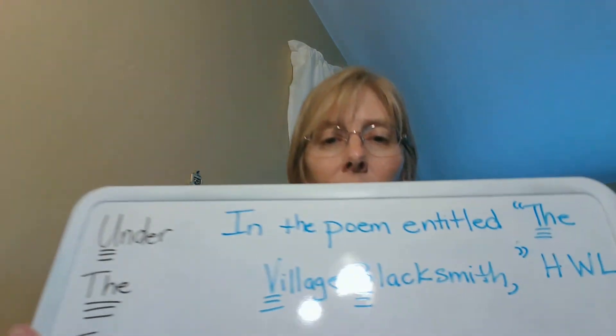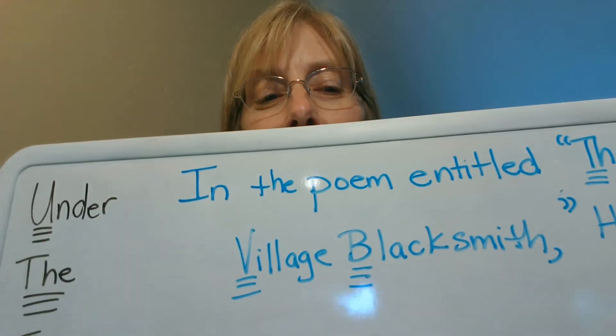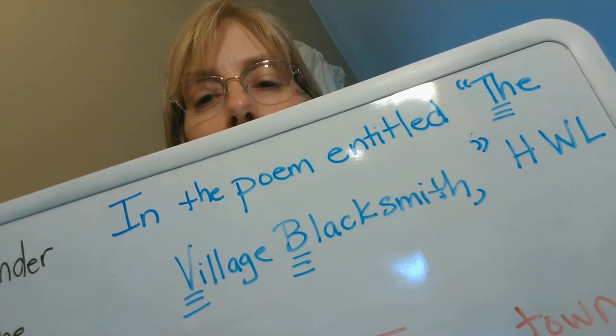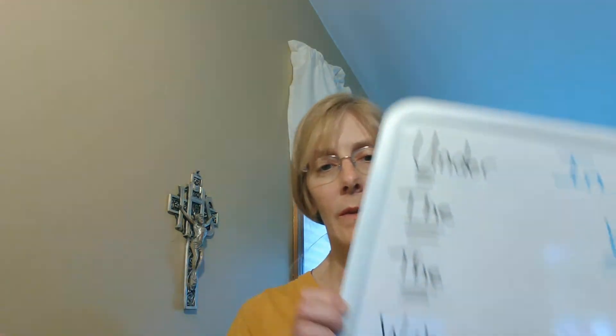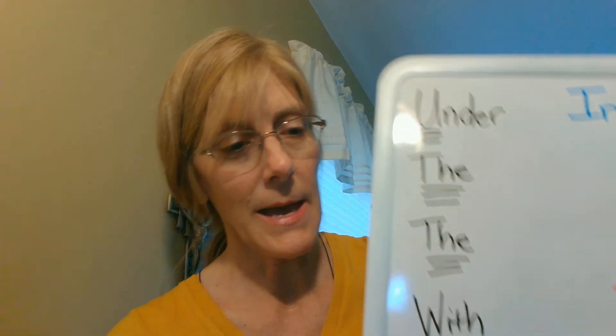So let's just do that part first. In the poem entitled 'The Village Blacksmith,' and then Henry Wadsworth Longfellow — those would all be capitalized. Then we have the next part. If you look up in the example, you can see that you would capitalize the first letter of every one of those lines because none of it is indented. So it would look like that under 'the' and 'with.' That's your capitalization for today.